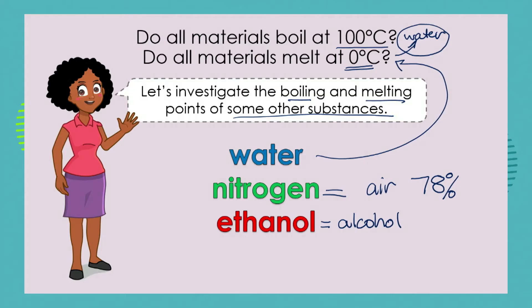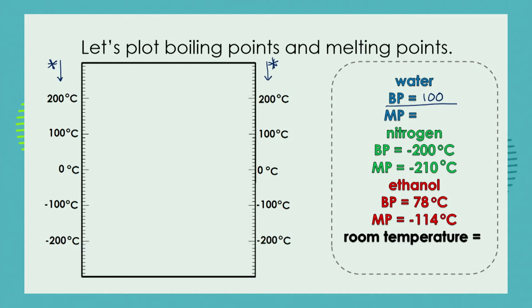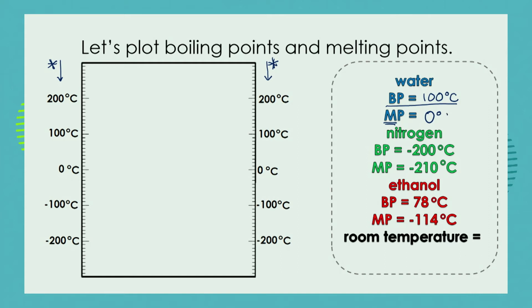We're going to look at these three materials on a graph with temperature on the y-axis. The boiling point of water is 100 degrees Celsius — you should know that by heart. The melting point of water is 0 degrees Celsius. Now, the boiling point of nitrogen is minus 200 degrees C, and its melting point is just 10 degrees lower.